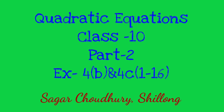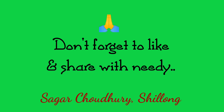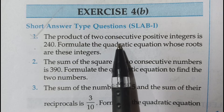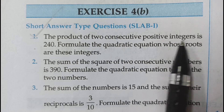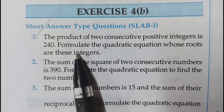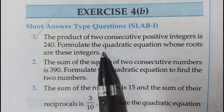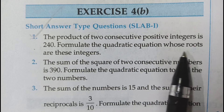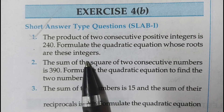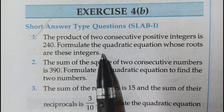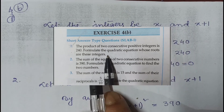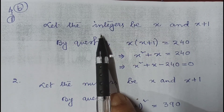Hello students. In the first part of quadratic equations I explained sums of 4a, and today I am starting 4b. The first question is: the product of two consecutive positive integers is 240. Formulate the quadratic equation whose roots are these integers. In this question we have to frame the equation only, as given.